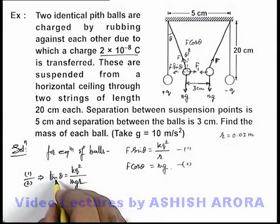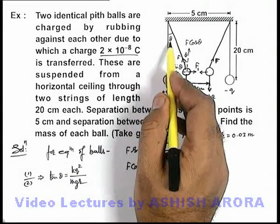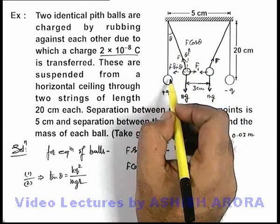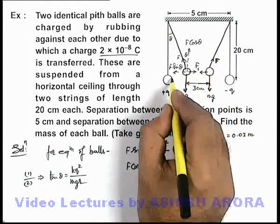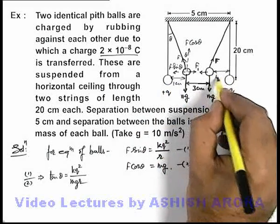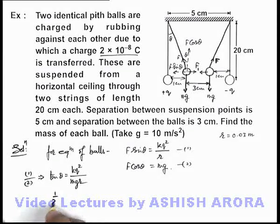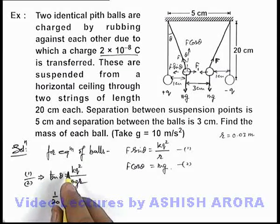If we substitute the value of tan theta here, tan theta can be approximated as sin theta. In this situation, if this is 5 centimeters, this is 3 centimeters, this distance will be 1 centimeter and this is also 1 centimeter. So tan theta can be approximately written as 1/20.